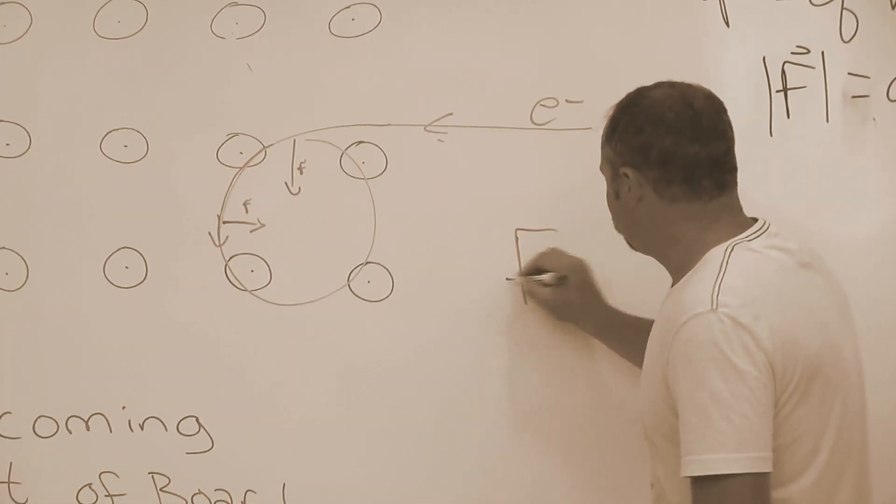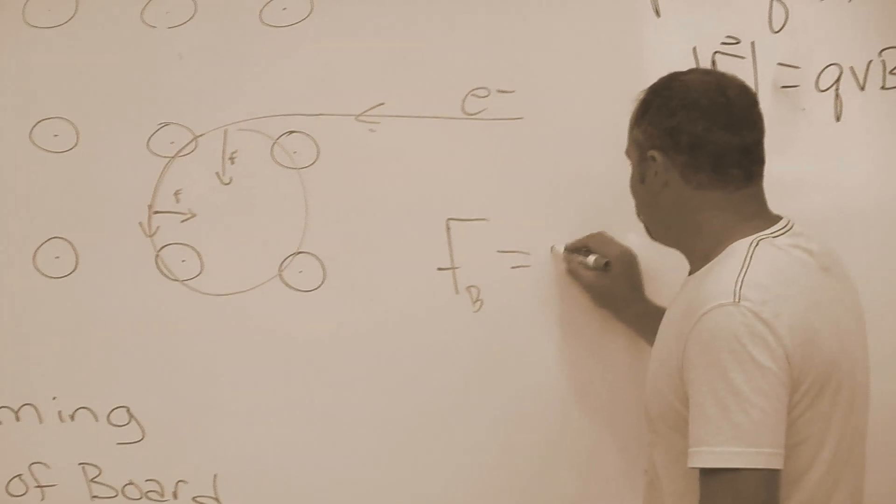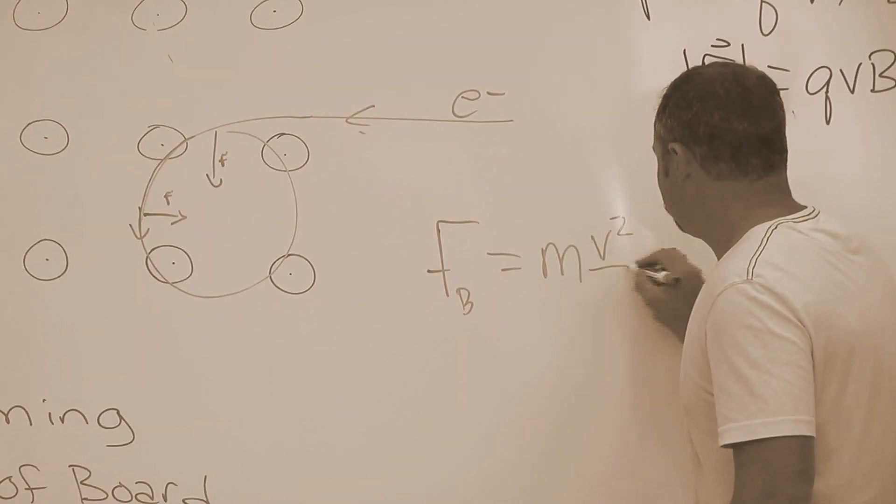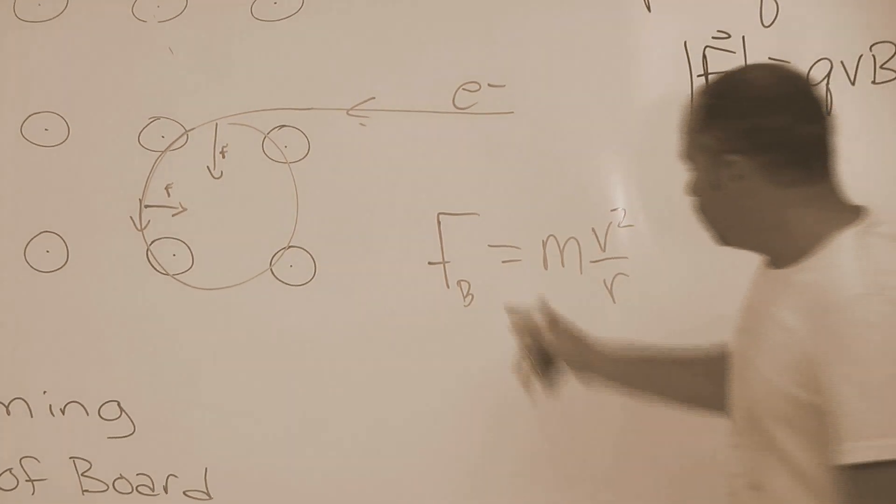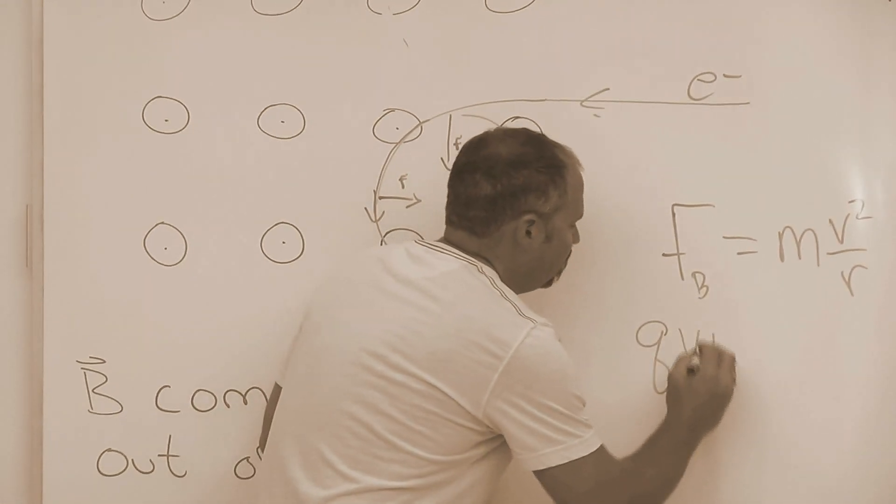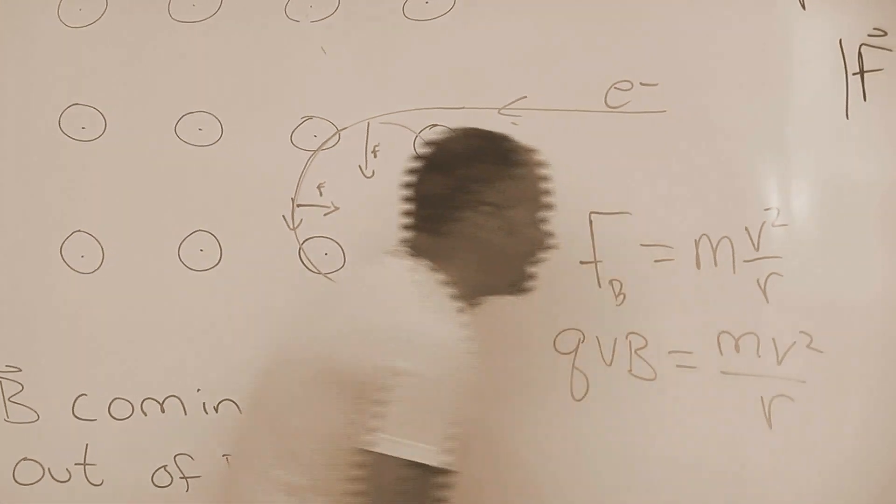So, we can say that this force of magnetism is equal to mass times the centripetal acceleration, which is v squared over r. And we know the magnitude of this force is qvB, and so that equals mv squared divided by the radius of this circle.